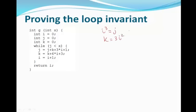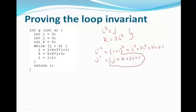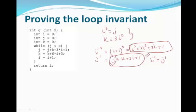If these are loop invariants, I must prove they are true in the beginning — obviously true since i, j, and k are all zeros. But what about after one iteration? i prime is i plus 1, and i plus 1 cubed equals i cubed plus 3i squared plus 3i plus 1. And j prime equals j plus k plus 3i plus 1. The question is: can we show that i prime cubed equals j prime? I can see 3i equals 3i and 1 equals 1, but I also need k to equal 3i squared. So let's prove k equals 3i squared as a loop invariant.